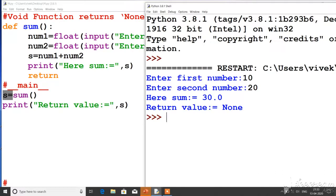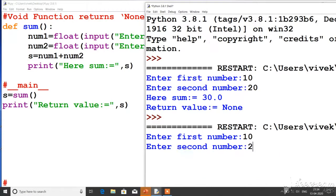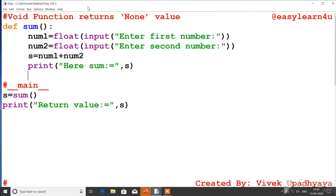Ek to yahi tarika hai ke aapke void function me return statement ho sakta hai. Dusra tarika hai ke aap usse return statement bhi hata dein. So this is the example of void function. Thank you.